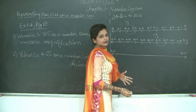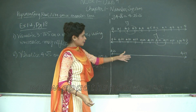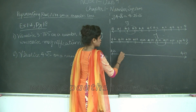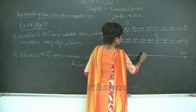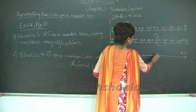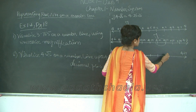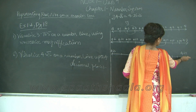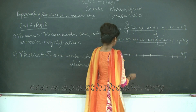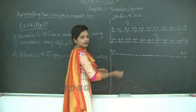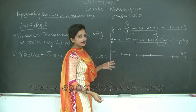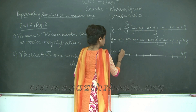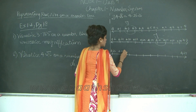Let us go ahead and divide this number line into 10 equal parts: 1, 2, 3, 4, 5, 6, 7, 8, 9, and 10. Each of these terms will increment by 0.001. So this gives us 4.261.